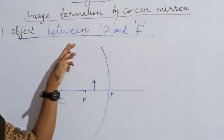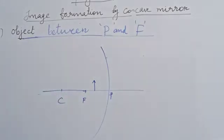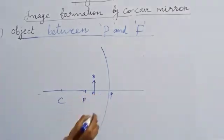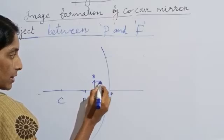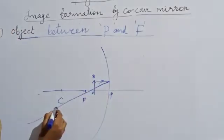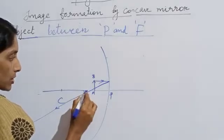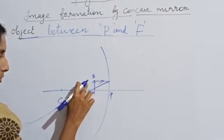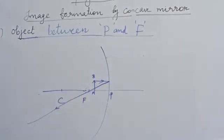Okay, next one. The object is between P and F. So here I have placed the object called as AB between P and F. First rule: the ray passing through parallel to the principal axis, after reflection, passes through the principal focus. The principal focus is going here.